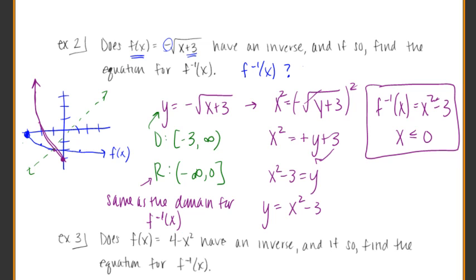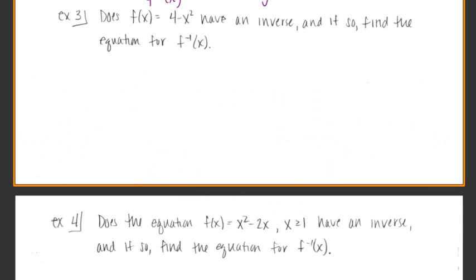So let's see if we can try this again with example 3. Again, it's asking the same question. Does the function f of x equal 4 minus x squared have an inverse? And if so, find the equation for it. All right. Let's think about a graph for this for just a second. 4 minus x squared. So obviously I've got a y intercept up there at 4 because when x is 0, y is 4. And if I plug in 1, 4 minus 1 squared is 3. If I plug in 2,